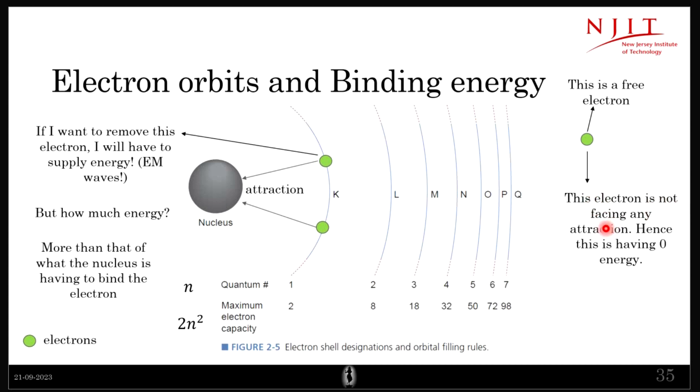This electron is not facing any attraction, hence we can consider that this is zero energy—there's no attraction on this. This is not under any influence of forces or attraction, and so we can say this is having zero energy. If I supply, let's say, one electron volt energy to this particular electron, it will move with a kinetic energy of one electron volt.